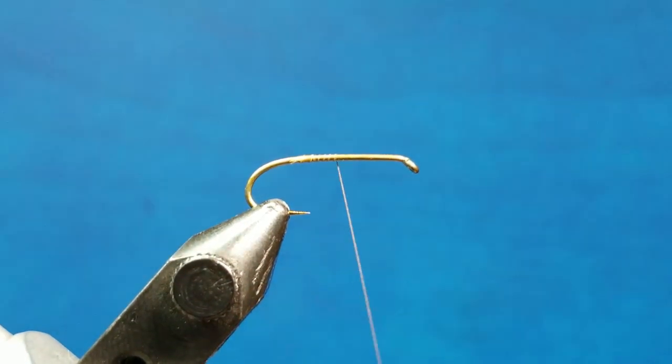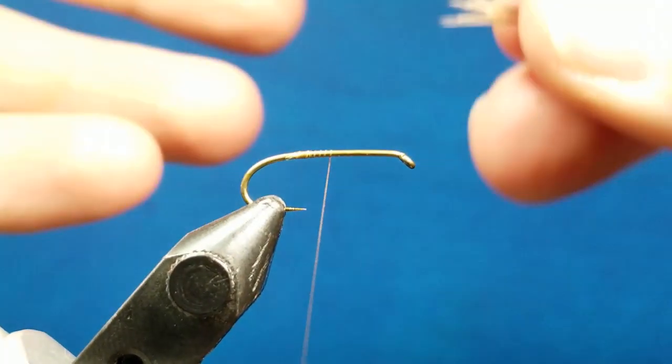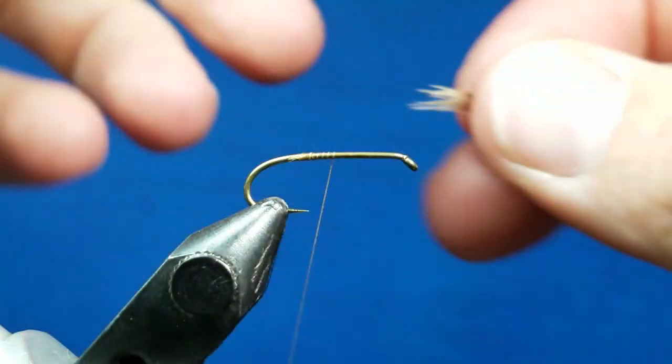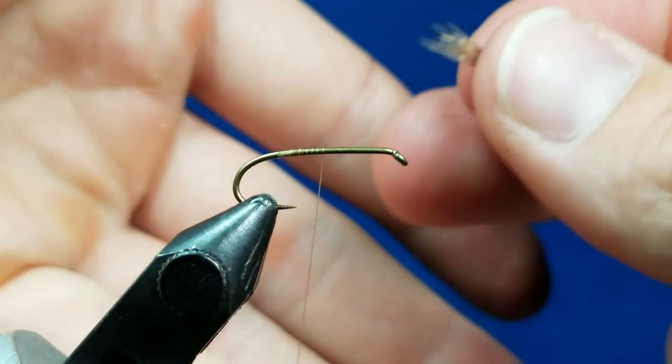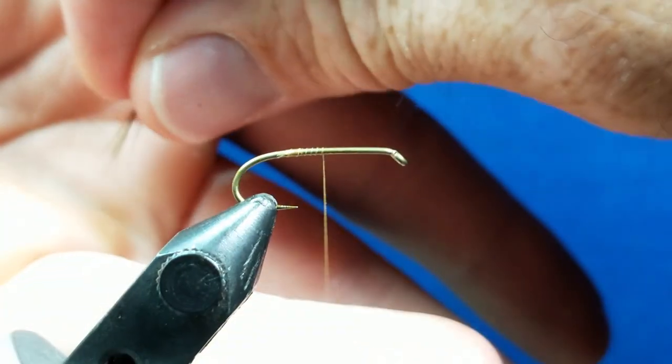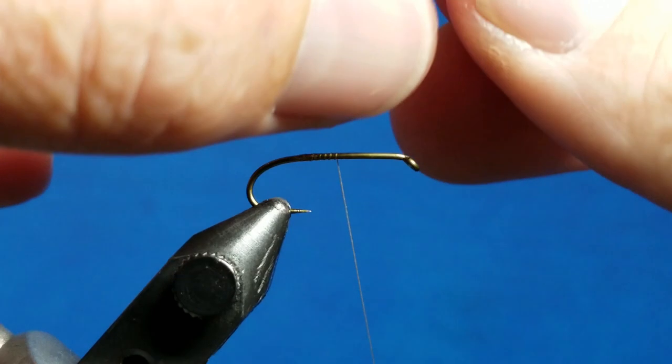So if I bring in another clump here, I've just kind of finger stacked this stuff. I know you can use big hair stackers if you're doing large quantities, but for small stuff like dries I like to just cut out the little bit that I need, turn it upside down, tap it on the palm of my hand to even out those tips. So if I come forward here...